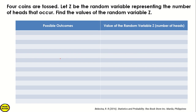Hello mga kawamat, in this video lesson, we illustrate random variables and find the possible values of a random variable given a situation. For our problem today, 4 coins are tossed. Let Z be the random variable representing the number of heads that occur.